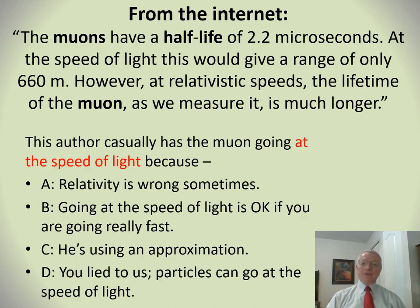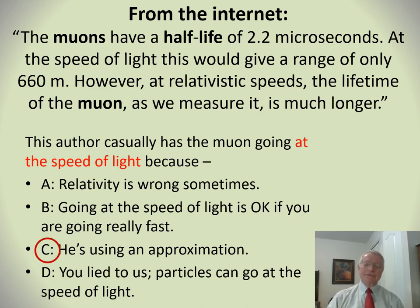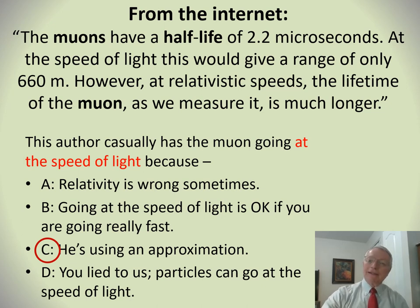I found this on the internet: a reporter wrote that muons have a half-life of 2.2 microseconds at the speed of light, which would give a range of only 660 meters. However, at relativistic speeds the lifetime of the muon as we measure it is much longer. The author has the muon going at the speed of light. He's using an approximation — if the muon is going 99.9% of the speed of light it will go about 660 meters, nearly the same as at the speed of light. But a particle can't actually go at or faster than the speed of light.